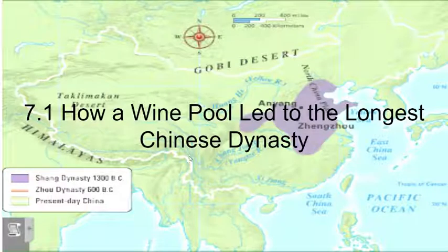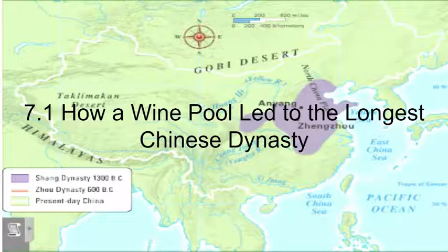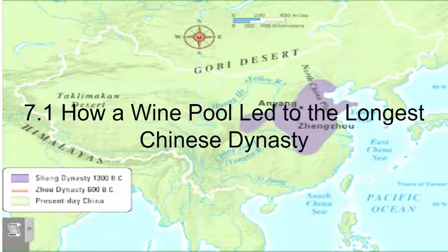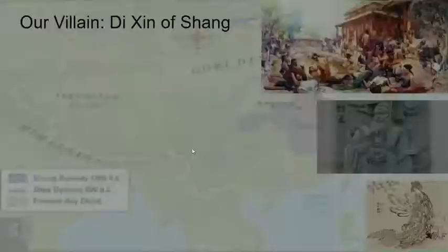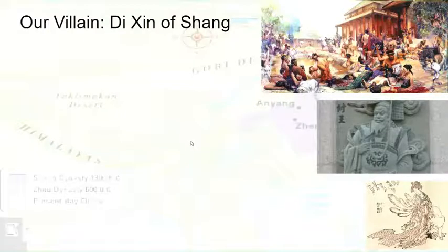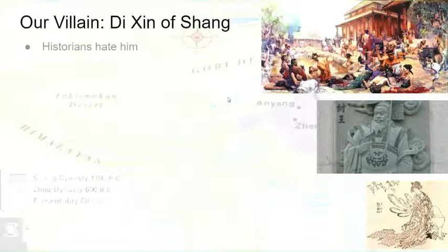Section 7.1: how a wine pool led to the longest Chinese dynasty. This is pretty much directly related to the homework with the same title, so feel free to open that up as you listen to this presentation. Our main villain is Di Xin of Shang — he is the last ruler of the Shang dynasty. Historians hate him, and you'll see why soon enough.